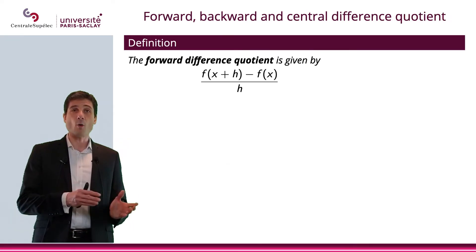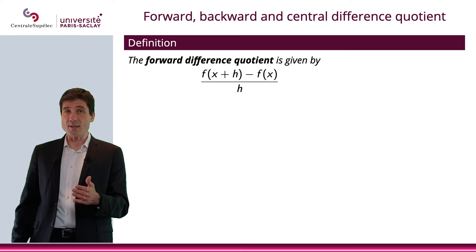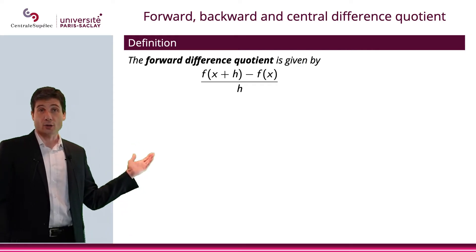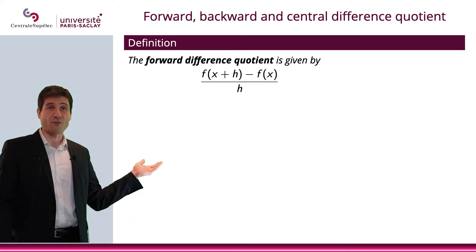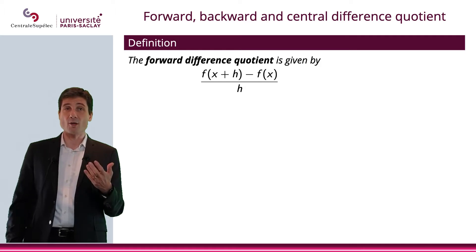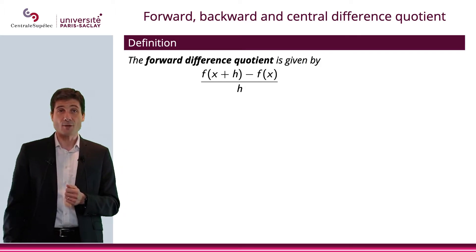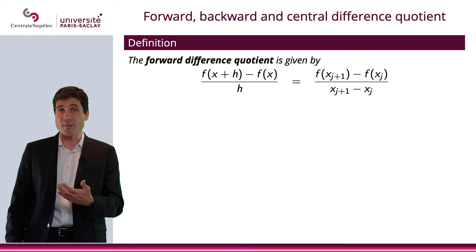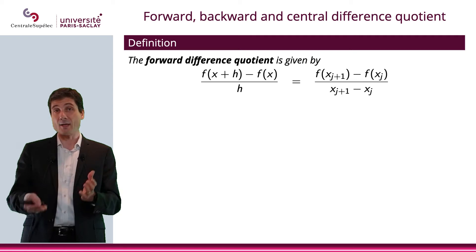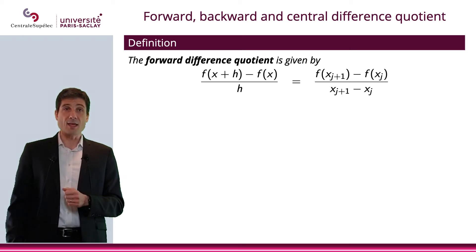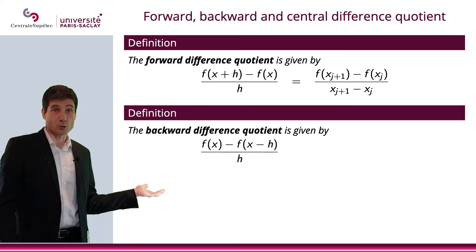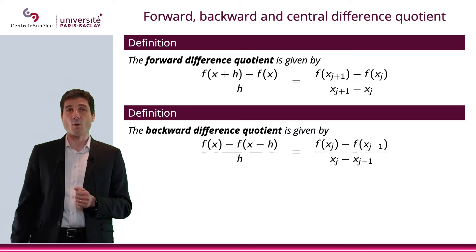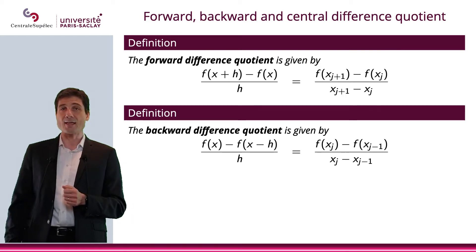Now that I've defined the forward, backward, and central differences, I can define the forward, backward, and central difference quotients. The forward difference quotient is the forward difference divided by h, in other words [f(x_{j+1}) − f(x_j)] / (x_{j+1} − x_j). The backward difference quotient is [f(x_j) − f(x_{j-1})] / (x_j − x_{j-1}).